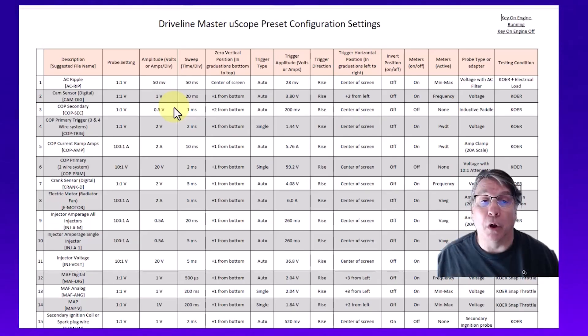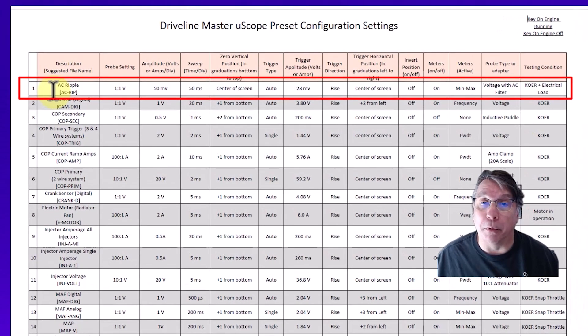I'm going to set up my uScope to do AC Ripple and I'm going to use this Driveline Master uScope preset configuration file that you can get from my channel. I'm going to use the top one which is my AC Ripple settings.